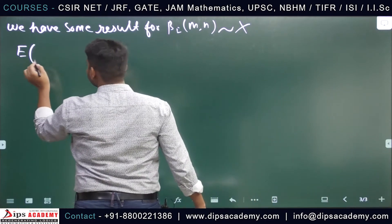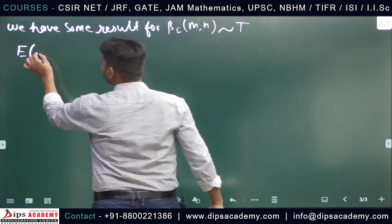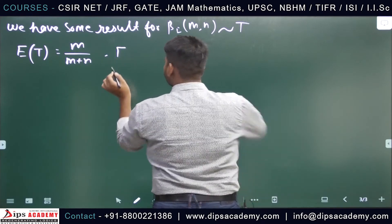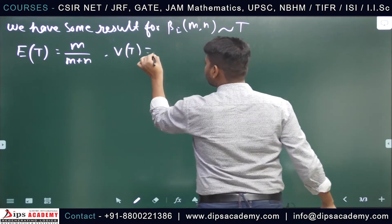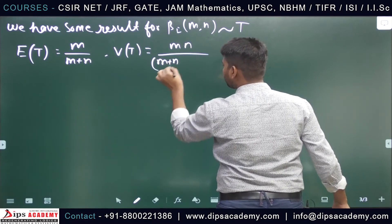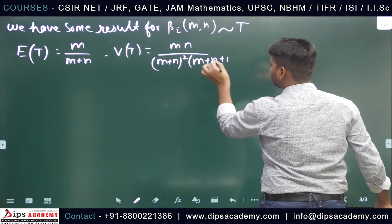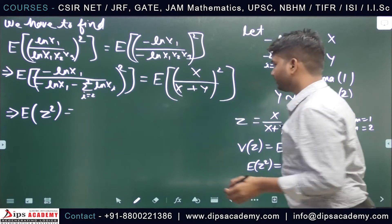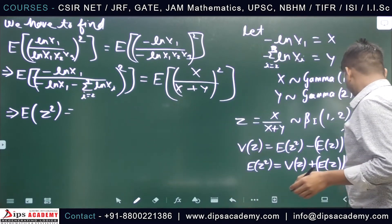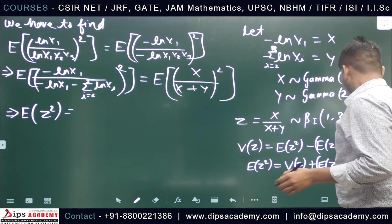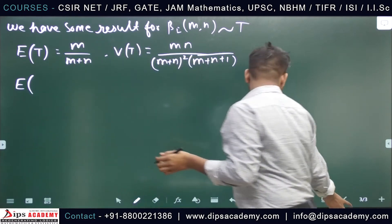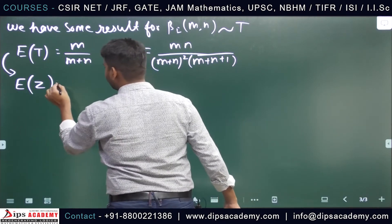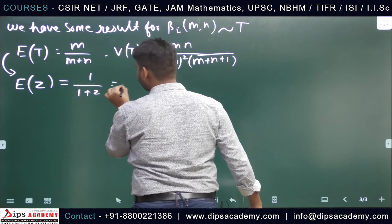For Z following Beta with parameters m and n, the expectation of Z equals m divided by m plus n. Here m equals 1 and n equals 2, so E[Z] equals 1 divided by 1 plus 2, which equals 1/3.